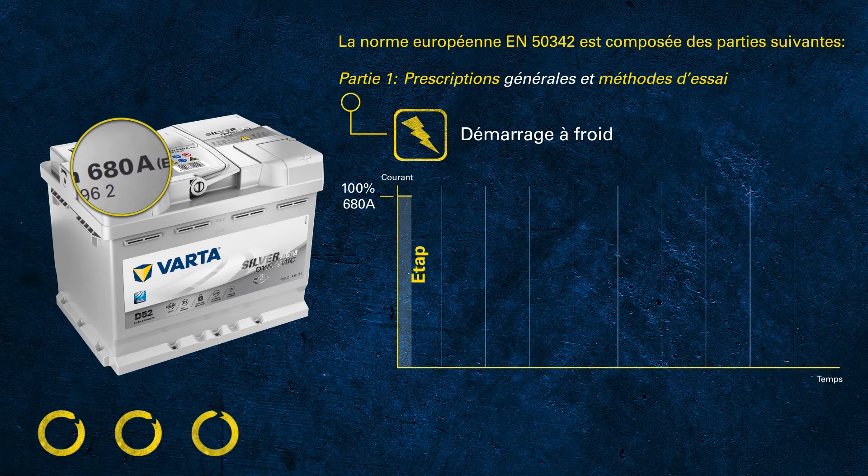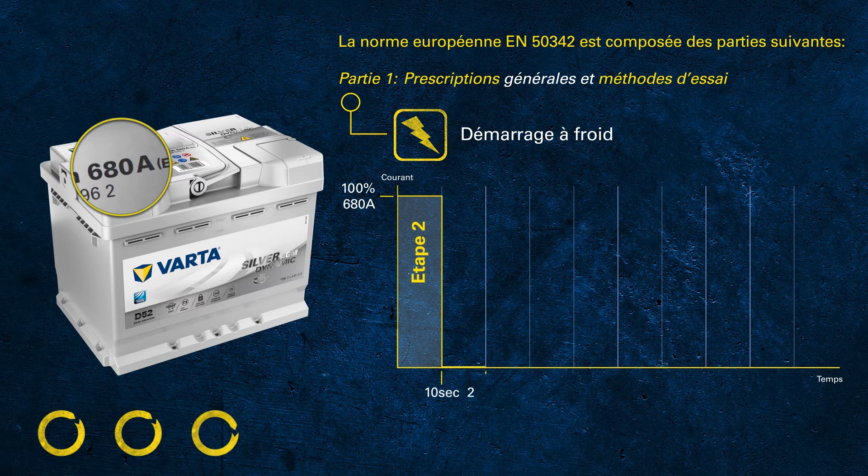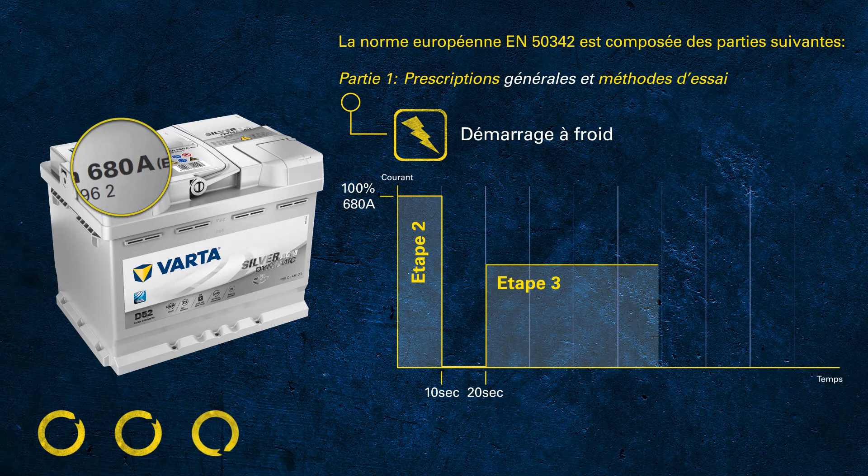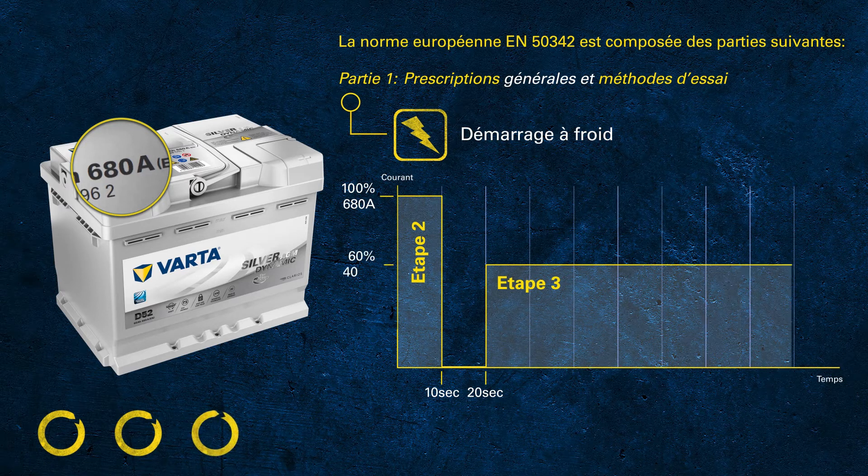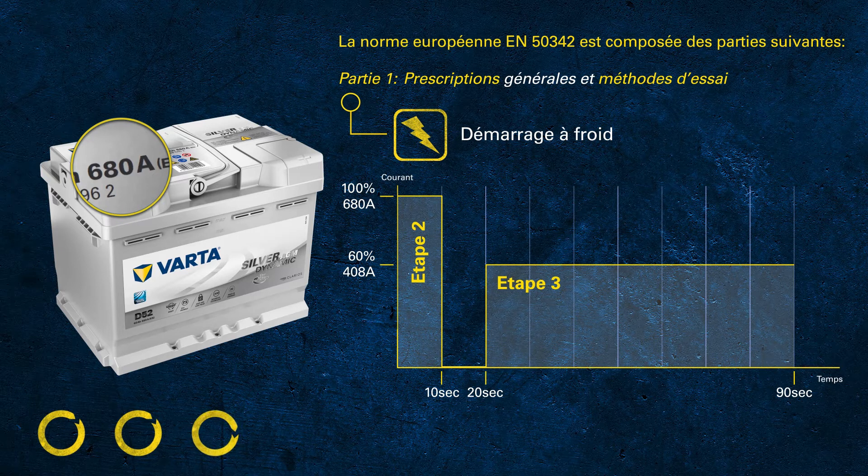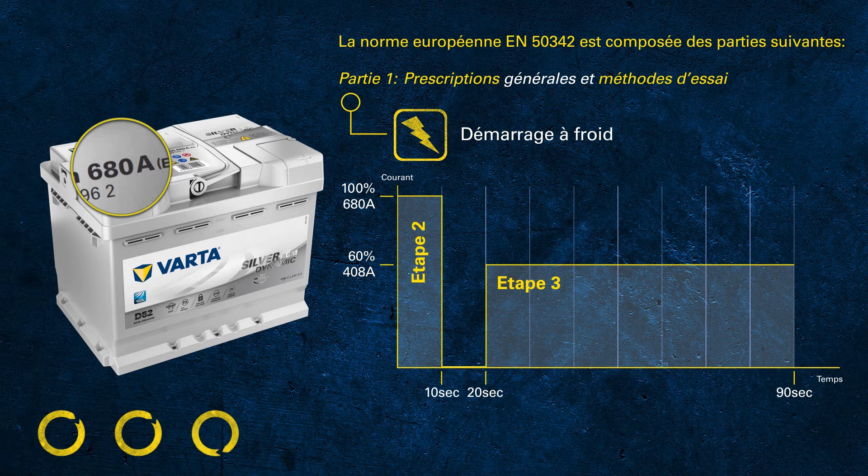During the test, we discharge this high current for 10 seconds. Following this, the battery rests for another 10 seconds. After this short resting time, we continue to discharge the battery with a current of 60% of the rated value. In this example, 60% of 680 equals 408 amps.